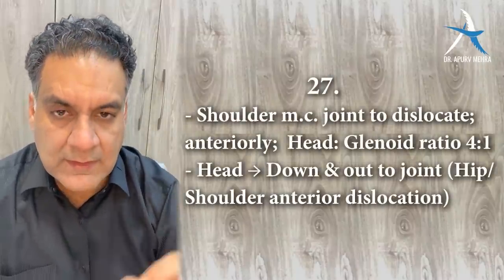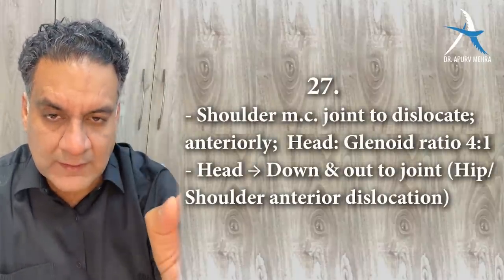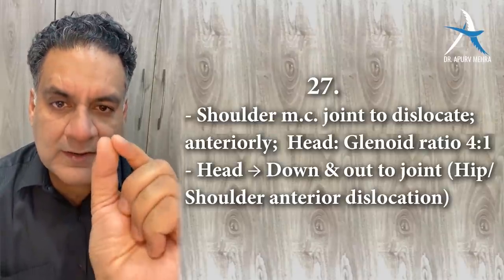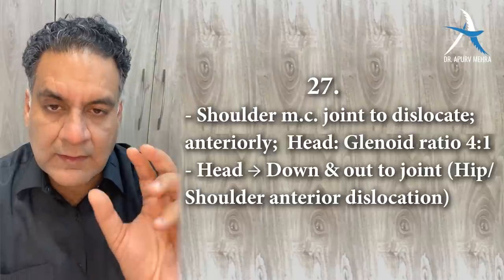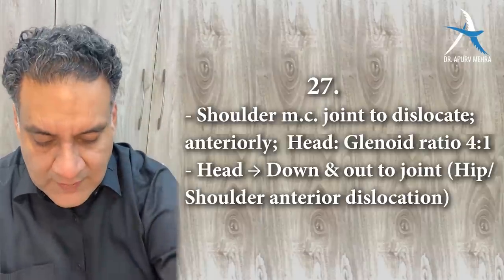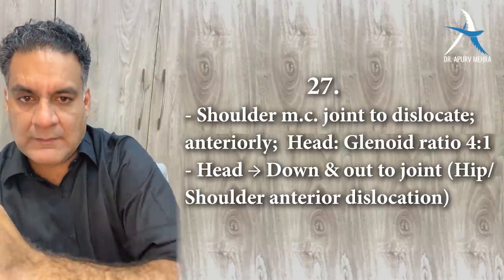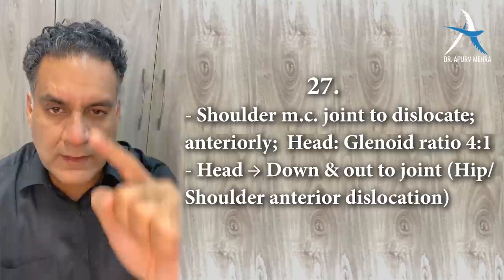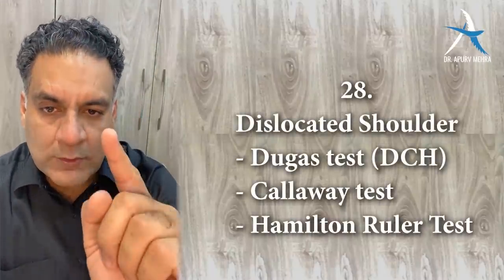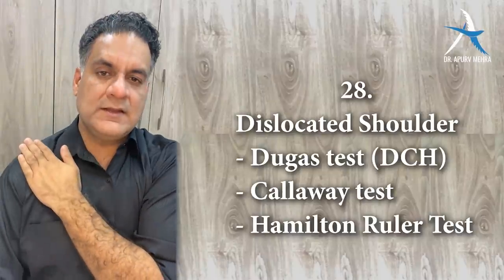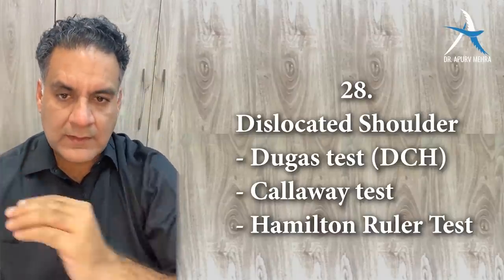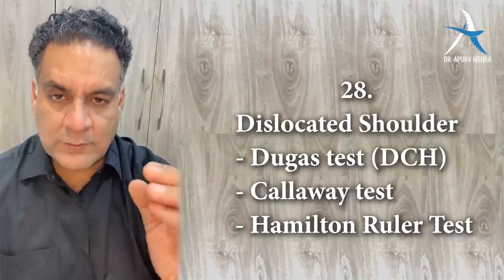Point number twenty-seven: the shoulder has a ratio of 4:1 between the head of humerus and the glenoid — like a golf ball on a tee. So it's the most common joint to dislocate, and it dislocates anteriorly. When it dislocates anteriorly, the arm is abducted and the head is below the glenoid — down and out. The test to diagnose a dislocated shoulder is Dugas test — failure to touch the tip of the opposite shoulder. Callaway and Hamilton ruler tests are other names.